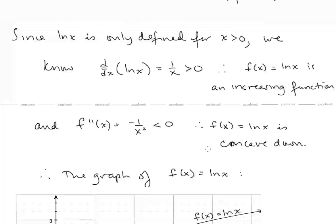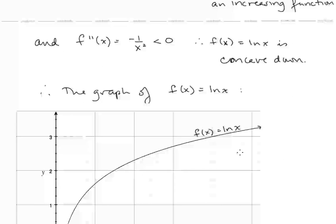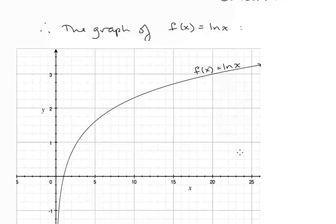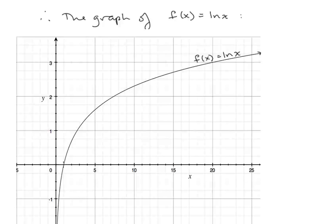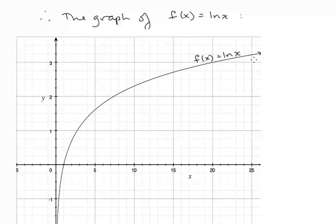We can take a second derivative. f double prime is going to be the derivative of 1 over x, that's negative 1 over x squared, and we see that this is always negative. That tells us f is concave down. So with all of this information, we can sketch the graph of ln x. It goes through (1, 0), the limit as x goes to 0 from the right is negative infinity, the limit as x goes to infinity is positive infinity, and it's increasing and concave down.